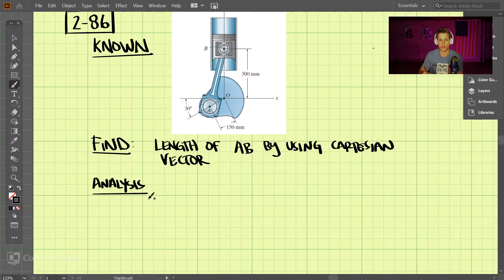Okay, so this is 286. We're given this connecting rod here, and we're looking for the length of A to B. So this connecting rod, A to B, and we're supposed to use Cartesian vectors, and this is going to be a position vector here.